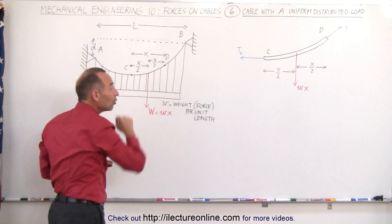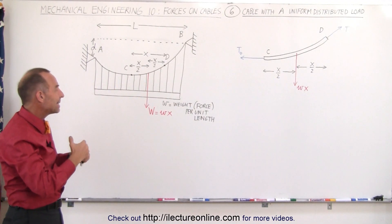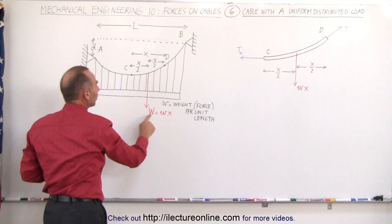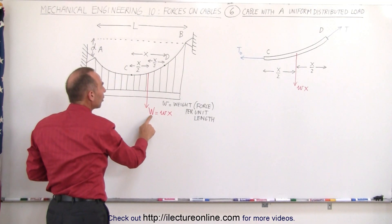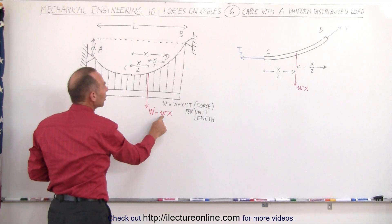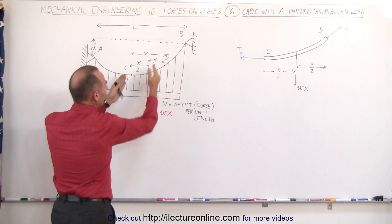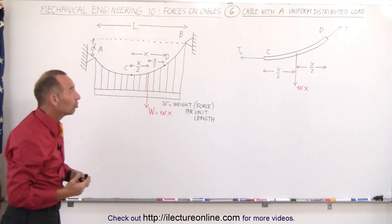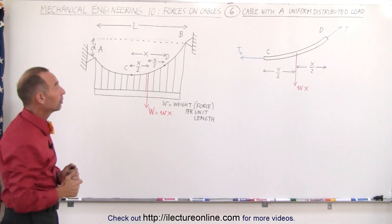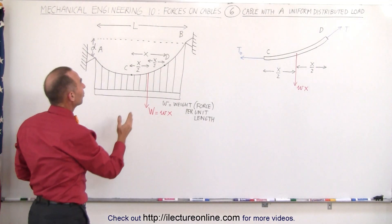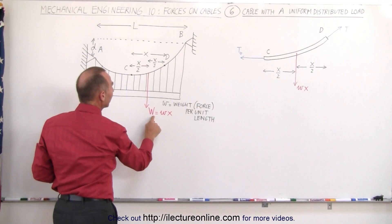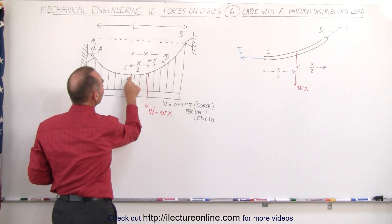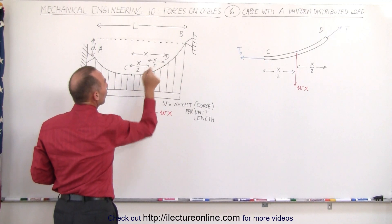Since the load is uniformly distributed, the net or resultant load on that section of the cable — we can call that large W — is equal to the weight per unit length multiplied by the length X. And we know that resultant acts exactly in the middle, so the distance from C to where it acts is X over 2, and the distance from D is also X over 2.